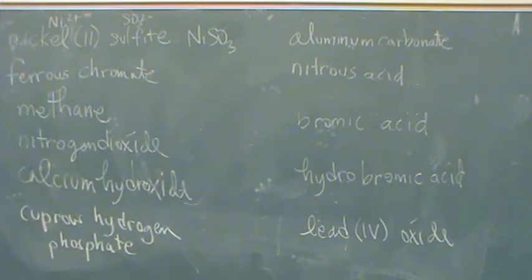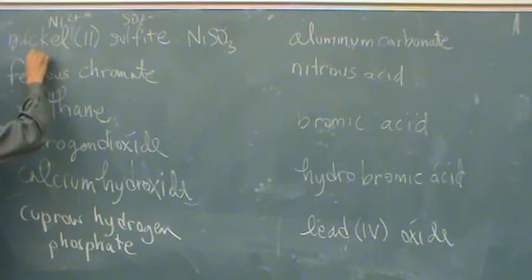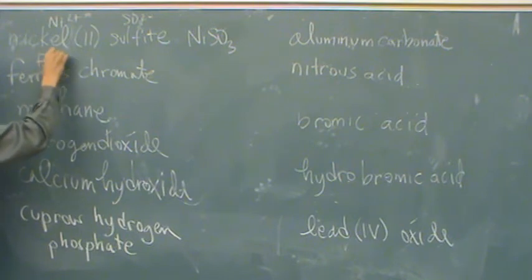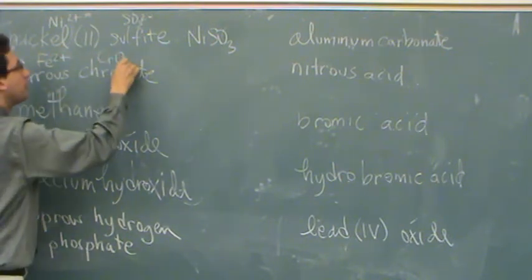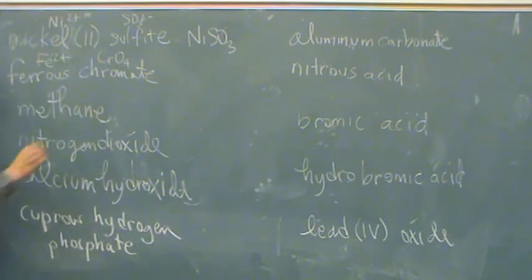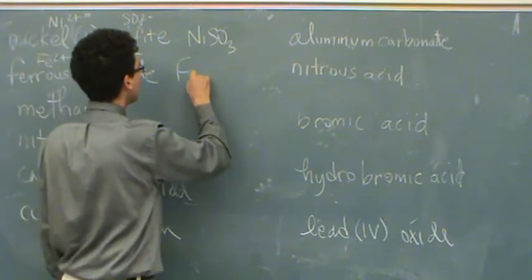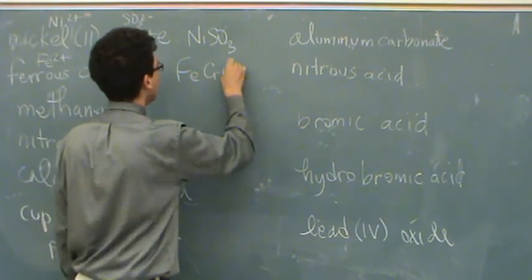Because 2+ and 2-. Okay, ferrous chromate. Ferrous, you have to remember -ous, that's the lower charge. That's what charge? Plus 2. Yeah, plus 2. Chromate, you have to remember CrO4, what charge? 2-. Yeah, chromates are always 2-, the two that we know. So these just go together, FeCrO4.